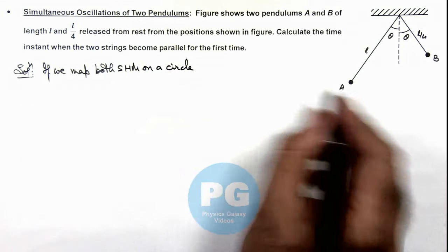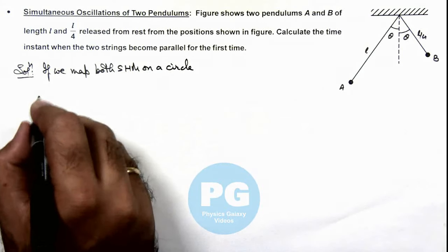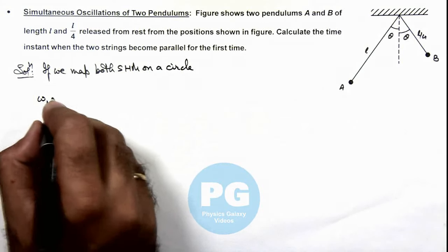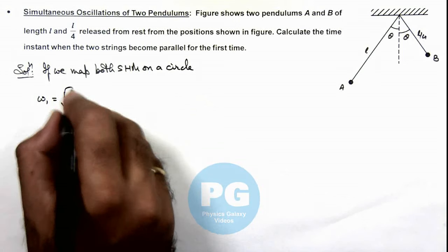we can see their angular frequency of oscillations will be omega_1 for A will be root of g by l.